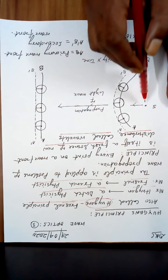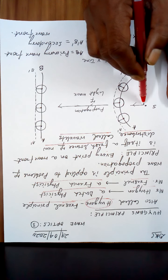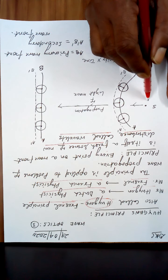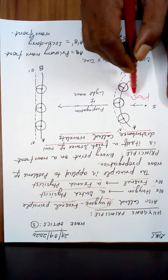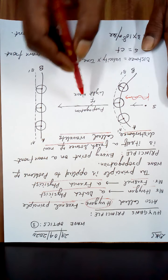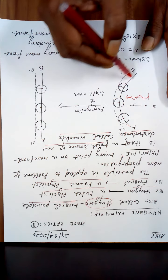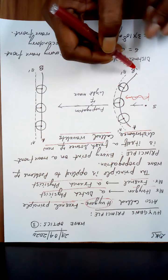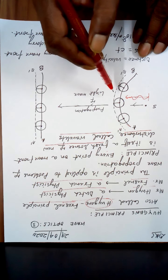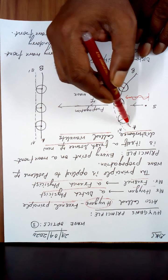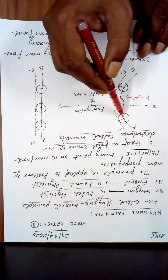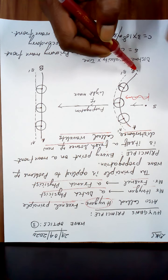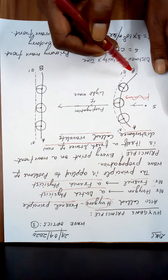Suppose this is a source of light. The wave is traveling to this side. Suppose AB is a wavefront — means all the points on AB, all the points lying on AB, are identical in the state of vibration.